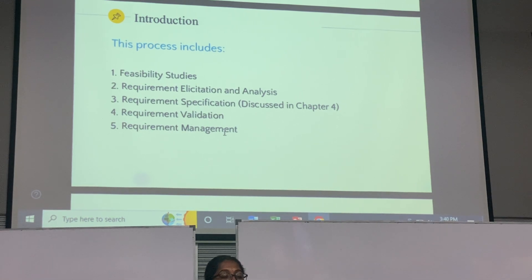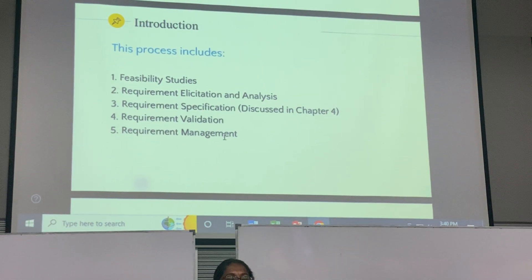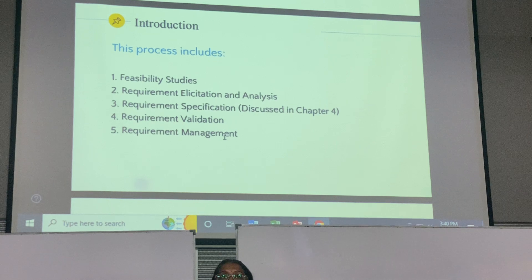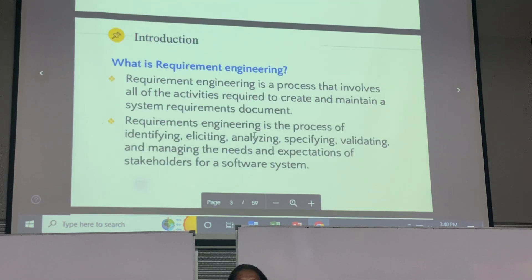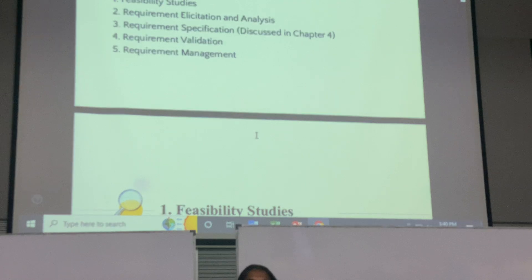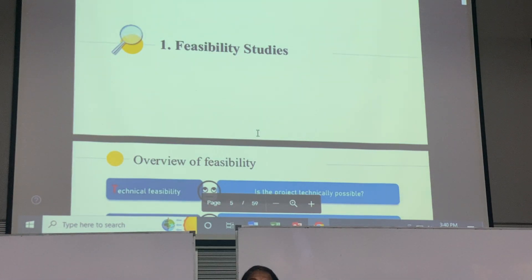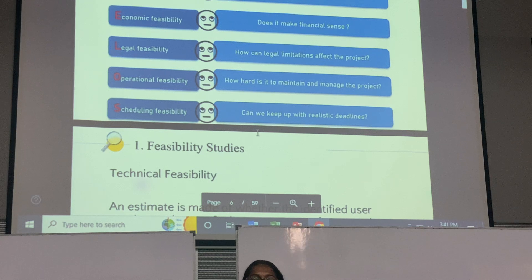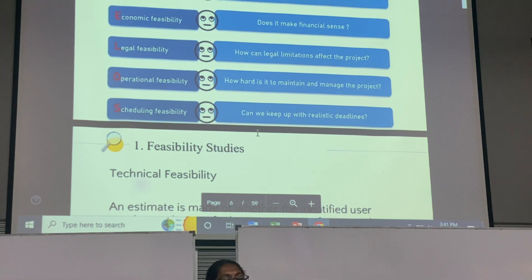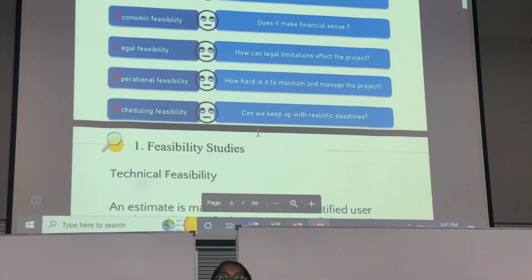Next is Requirements Validation, which is about testing. Then we have Requirements Management. Basically, these are the five processes involved in requirement engineering. Let's look at the first process: Feasibility Studies. Under feasibility studies, there are five types: technical feasibility, economic feasibility, legal feasibility, operational feasibility, and scheduling feasibility. Please remember these.